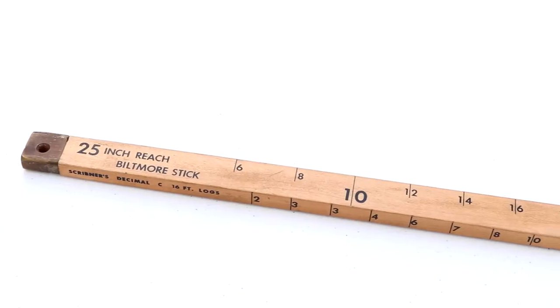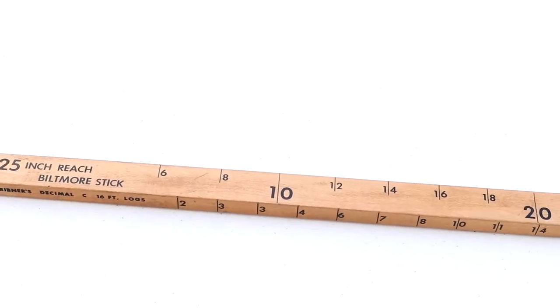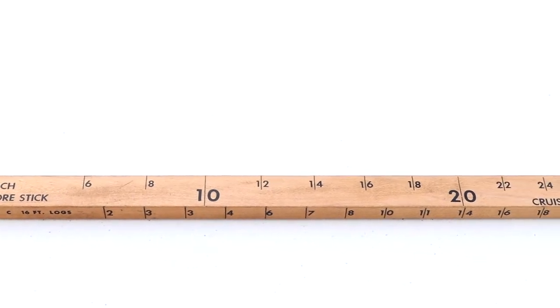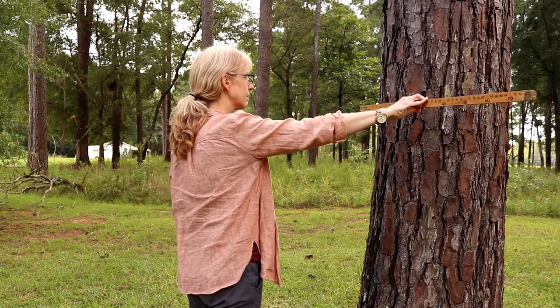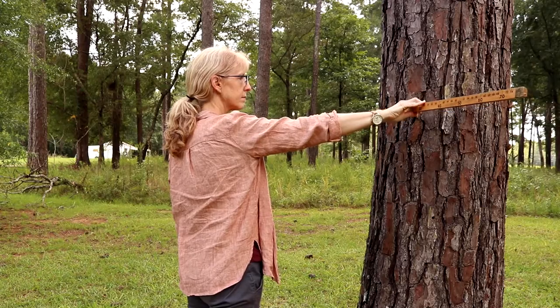A Biltmore stick allows for quick estimation of diameters to the nearest one or two inches. The stick is held against the tree at breast height, usually 25 inches from the eye.